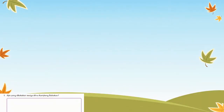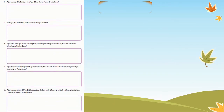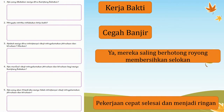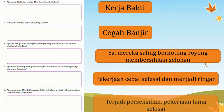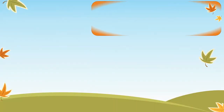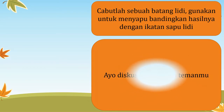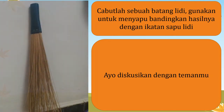Warga kampung babakan melakukan kerja bakti. Mengapa mereka melakukan kerja bakti? Tujuannya untuk mencegah banjir. Apakah desa mengutamakan persatuan? Ya, mereka saling bergotong royong. Apa manfaatnya? Pekerjaan cepat selesai dan menjadi ringan. Apa yang terjadi jika tidak bersatu? Maka akan menjadi perselisihan. Cabutlah sebuah batang lidi dan gunakan untuk menyapu, kemudian bandingkan hasilnya dengan ikatan sapu lidi. Lidi-lidi pada satu ikatan sapu lidi melambangkan persatuan dan kesatuan.